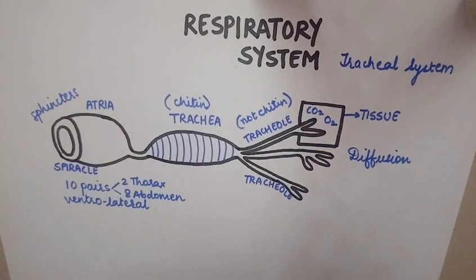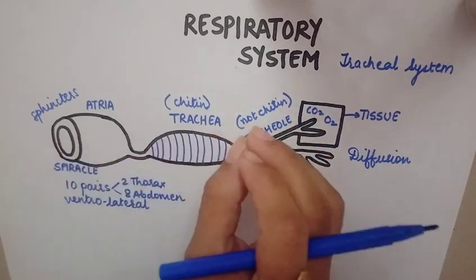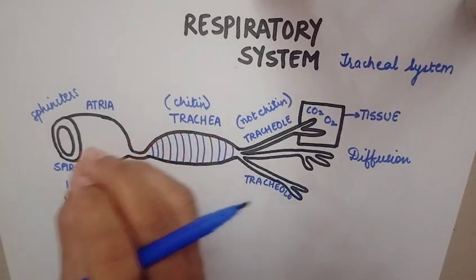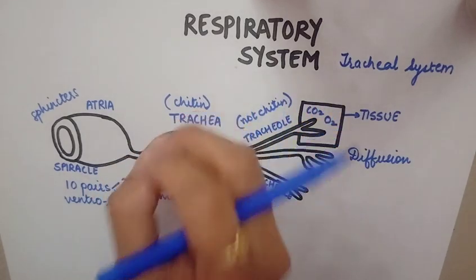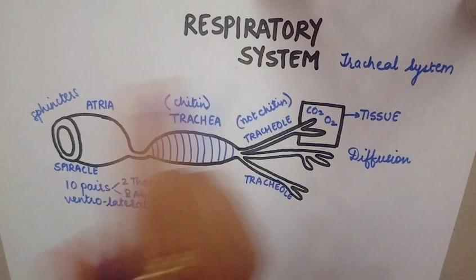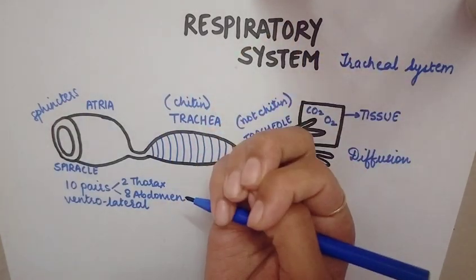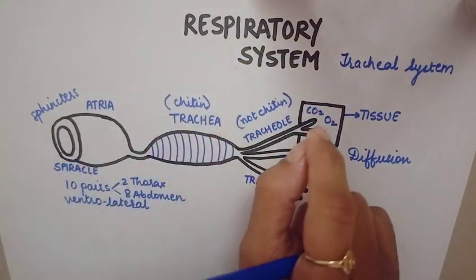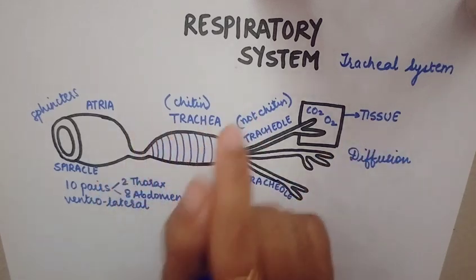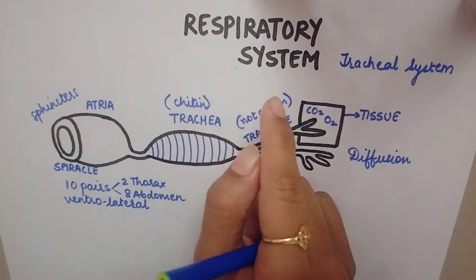The last part of the respiratory system of the cockroach to remember: unlike humans, there is no respiratory pigment present in the blood of the cockroach. In humans, we have hemoglobin as the respiratory pigment in the blood, which carries oxygen and helps in the exchange of gases. But in the cockroach, there is no respiratory pigment in the blood, so blood does not take part in the exchange of gases.